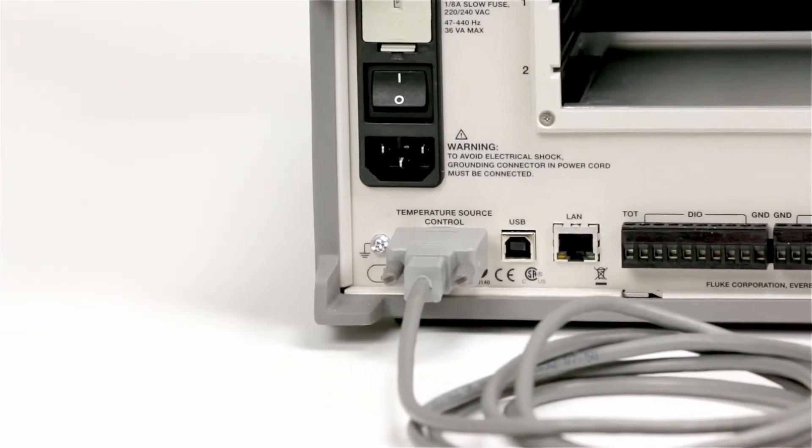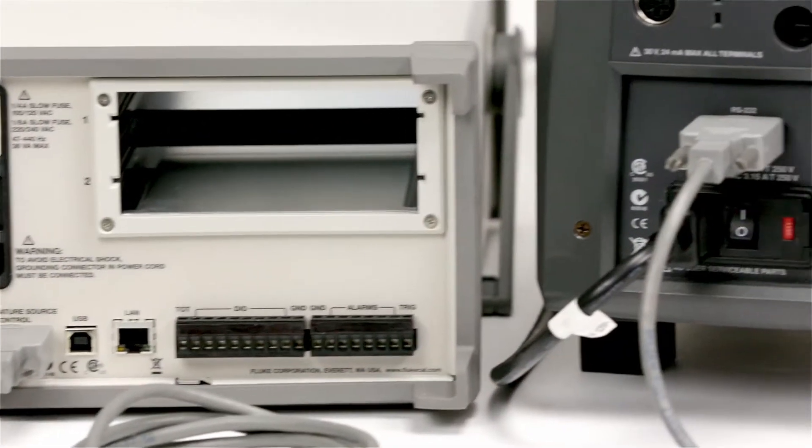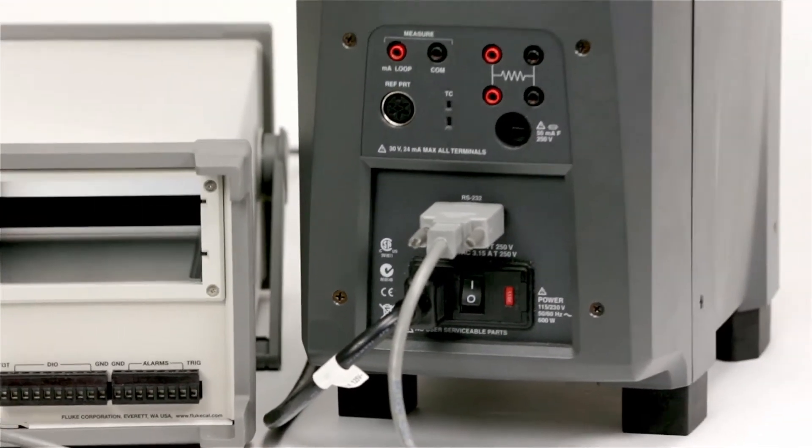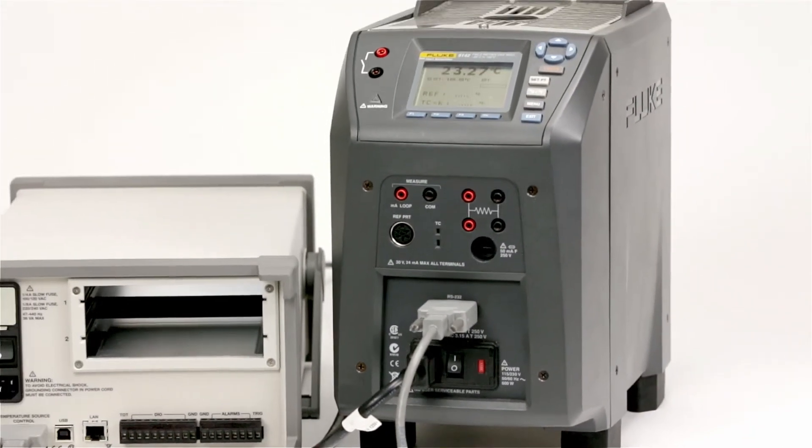The automated test feature is set up by first connecting the temperature source control port on the rear panel of the 1586 to the RS-232 port of the dry well.